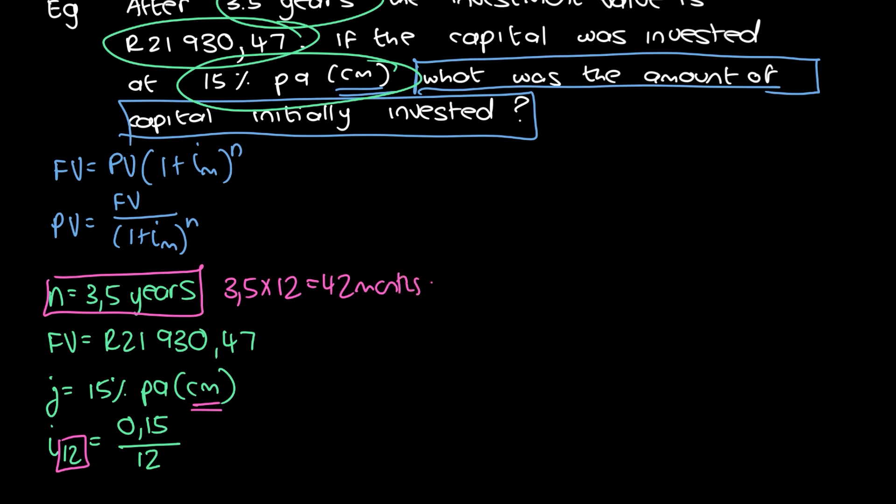Now we check, do we have all the information we need? So we have the future value. We have m, we have i, and we have n. So we can now just substitute it into the formula. So the formula is PV is equal to the future value, which is 21,930.47 divided by 1 plus 0.15 divided by 12, all to the power of 42.